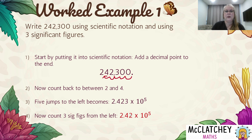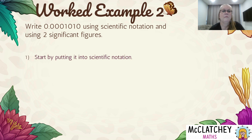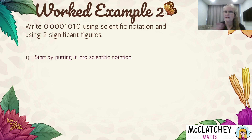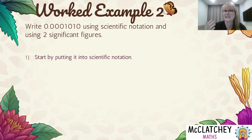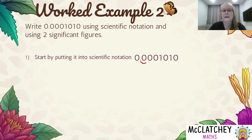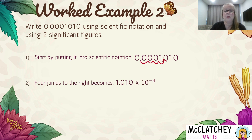Let's look at another worked example. We need to write 0.0001010 using scientific notation and two significant figures. First, get it into scientific notation. This is a very small number so we'll have a negative power, moving the decimal point to the right. We move it four positions to after the first non-zero digit, giving a power of negative four. So we write 1.010 times 10 to the negative 4.